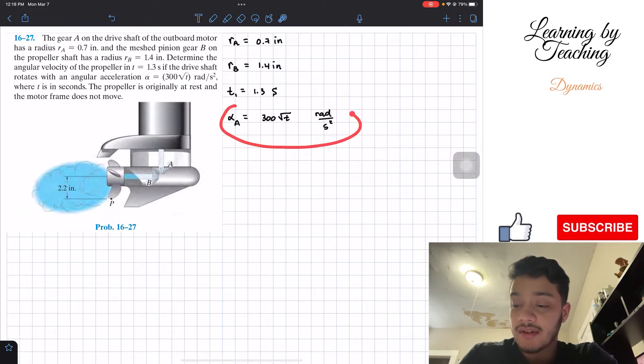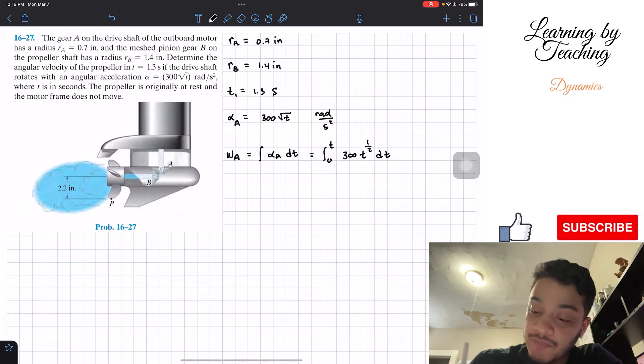Since we know the angular acceleration of A, what we can do is find the angular velocity at A, and we're going to do that by knowing that the integral of my acceleration with respect to time is equal to my angular velocity. So let's plug it in from 0 to t of my angular acceleration, which is equal to 300 square root of t. I'm going to put that square root of t as t to the 1 half dt.